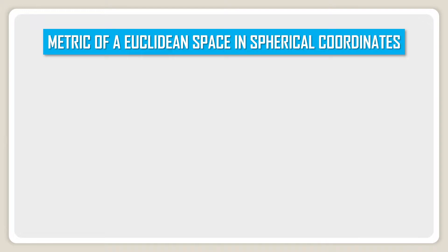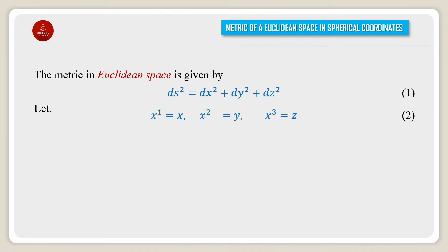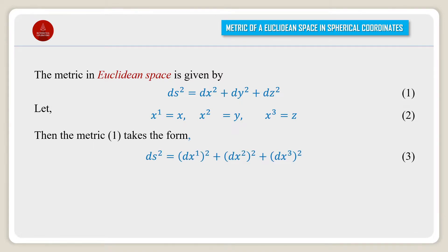Metric of a Euclidean Space in Spherical Coordinates. The metric in Euclidean space is given by ds² = dx² + dy² + dz². Let x¹ = x, x² = y, x³ = z. Then the metric takes the form ds² = (dx¹)² + (dx²)² + (dx³)².